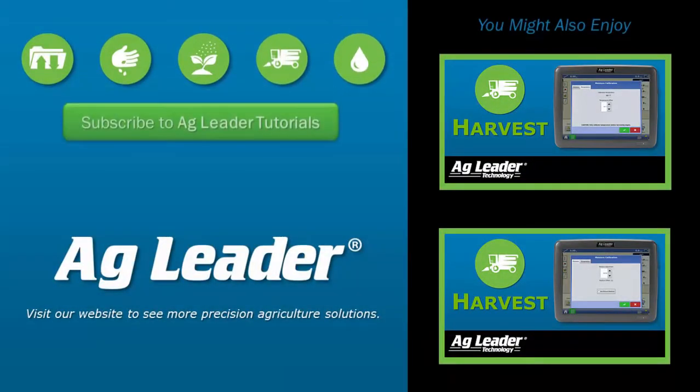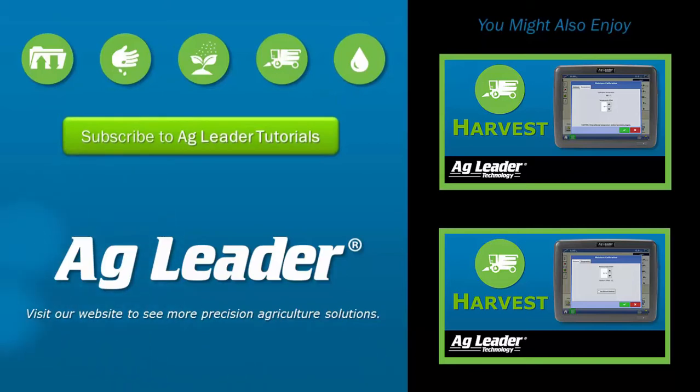Now you will be able to adjust the proximity switch to ensure you are getting accurate moisture readings while you harvest. If you'd like to see more short tutorials from AgLeader, please subscribe to our channel.